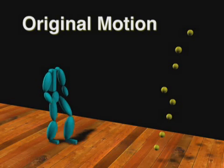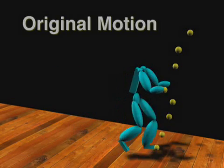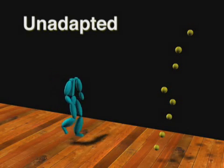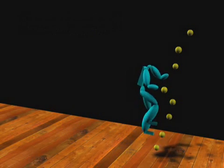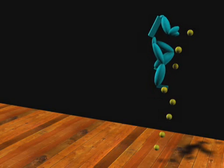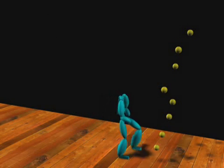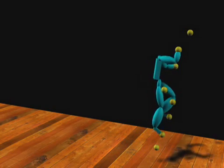This climbing example includes constraints on both the hands and feet. All of these constraints are violated when we apply the motion to a differently-sized character. Our method can adapt the motion so the small character can climb the big ladder.